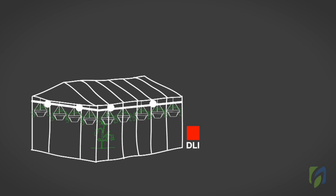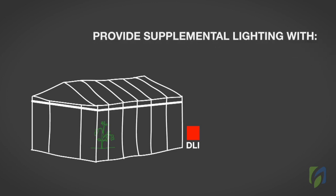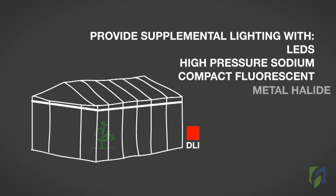There are a number of ways that you can increase the DLI inside of your greenhouse. Eliminate or minimize overhead shading. Ensure that the greenhouse covering is clean by removing whitewash, dust, algae, and condensation. Provide supplemental lighting using greenhouse lamps such as LEDs, high-pressure sodium, compact fluorescent, or metal halide.